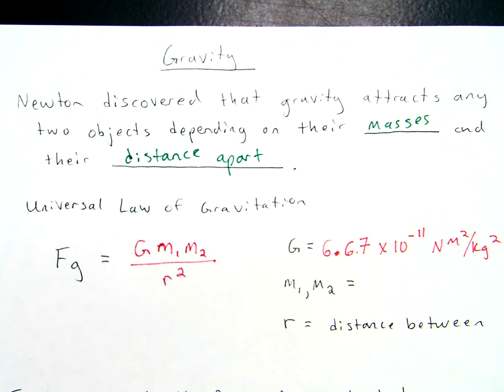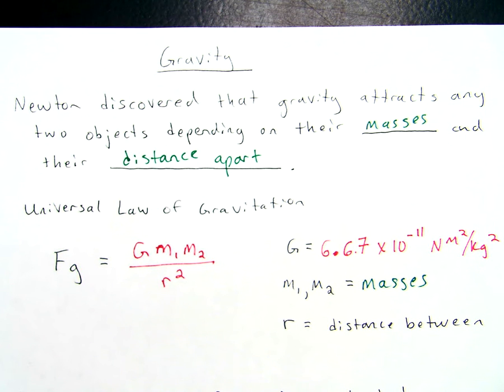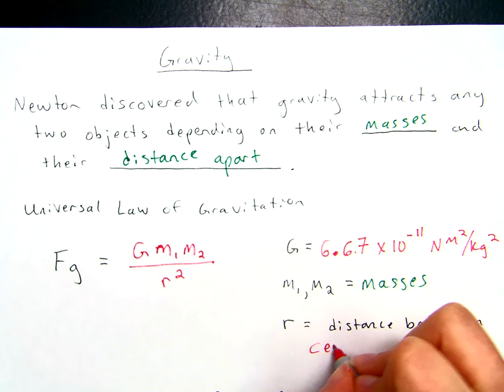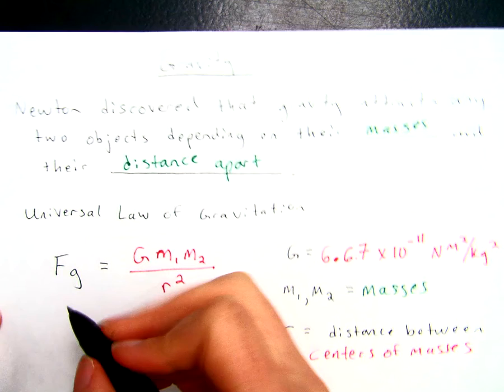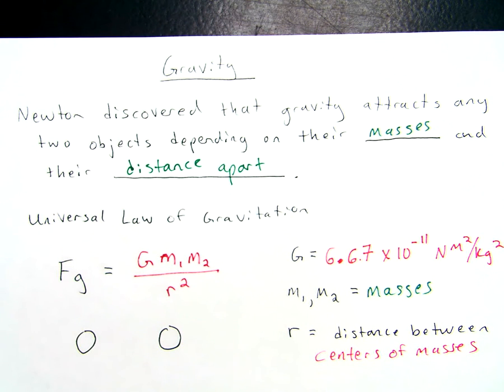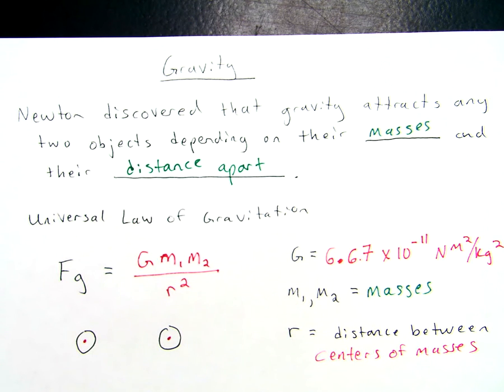And then we also have m1 and m2. These are going to be the two masses that we'll be observing in every single problem. Now, r, we already talked about with our circular motion, that r is a radius. In this case, it's a very specific radius. It's the difference between the centers of the masses. If we were to take two objects and we're trying to find the attraction between them, we would look at the distance from their center of masses. For spheres and circles, our center of masses are always in the direct center due to geometry.